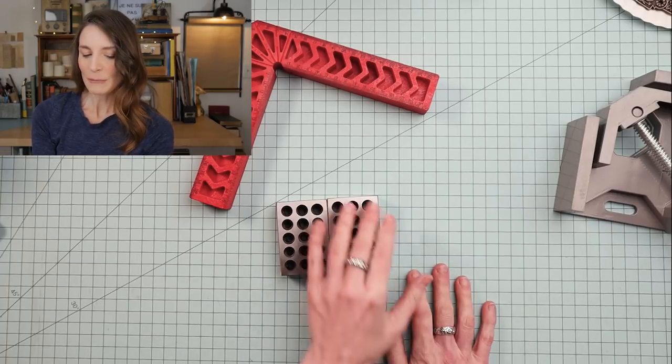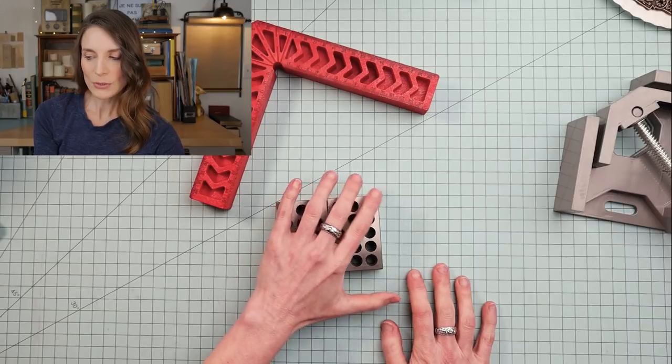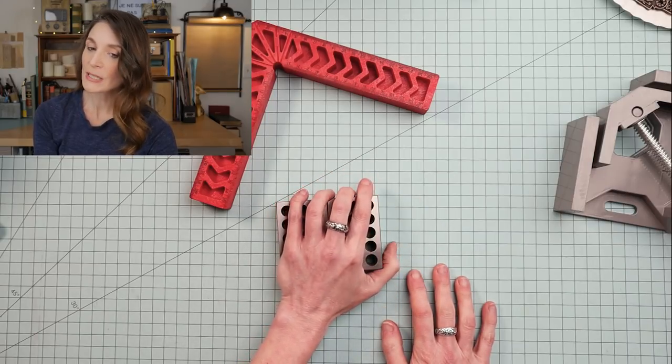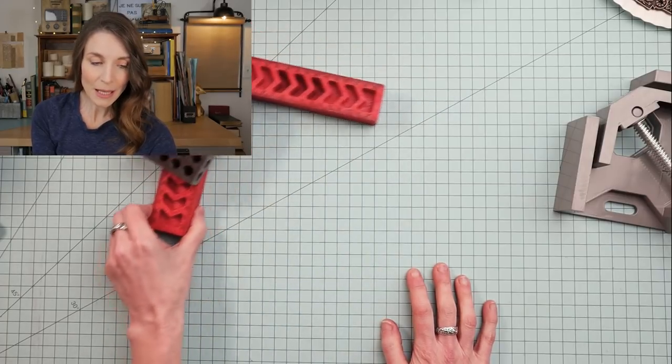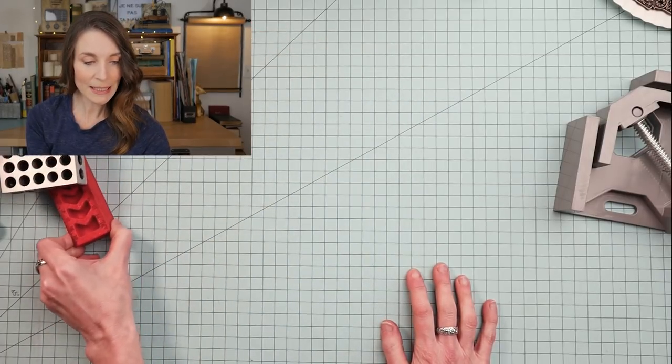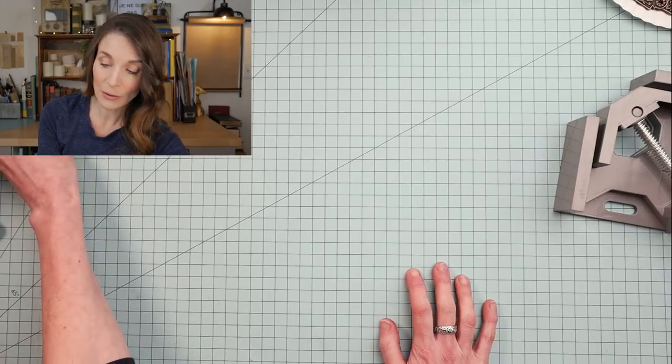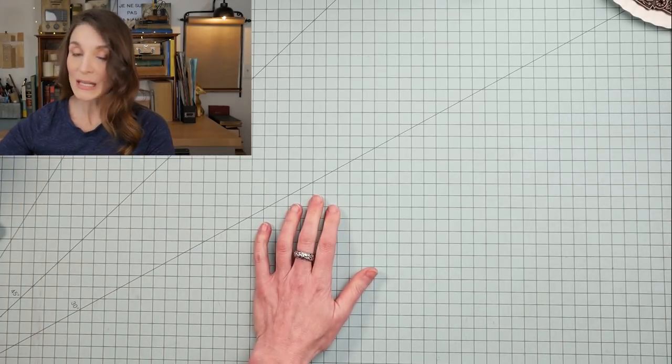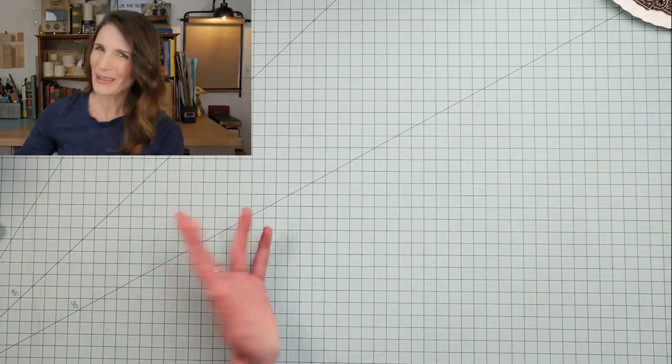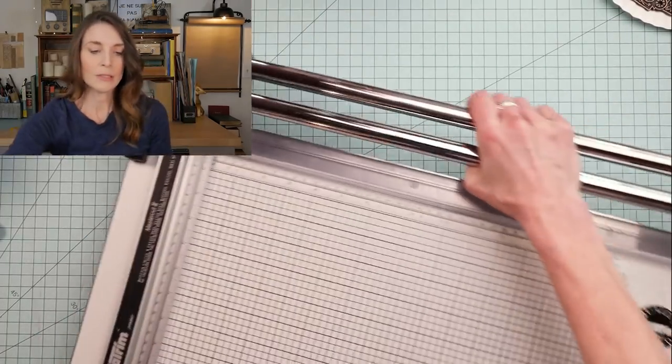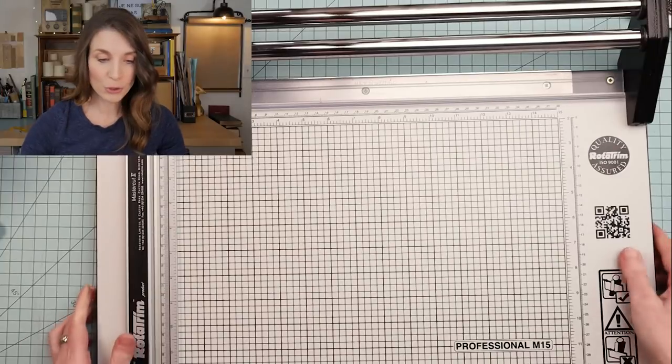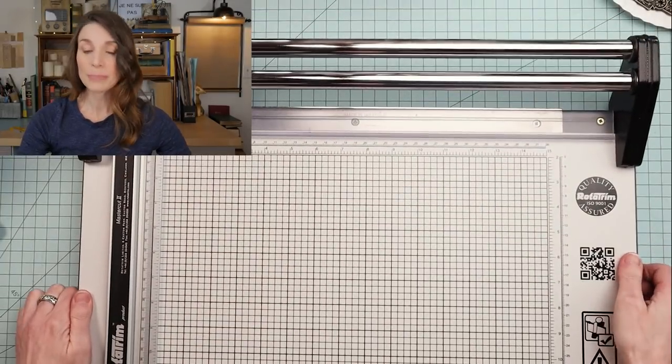All these things are useful in my life. I don't use all of these every single day. I do use the essentials and probably the most expensive thing that I have to show you now. And it does measure, so that's why I think it counts. Because it does have a grid on it. So this is my paper trimmer. I know it's a beast.